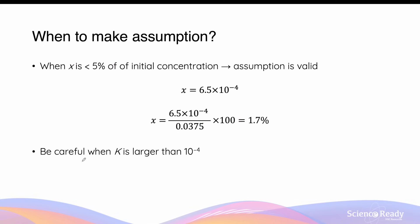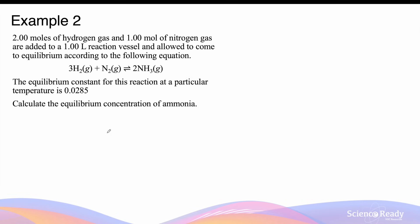Note that the 5% rule can only be checked after completing the calculation. A useful general guideline: if the equilibrium constant K is larger than 10⁻⁴ (including 10⁻⁴), be very careful, as x may exceed 5% of the initial concentration. If K is smaller than 10⁻⁴ — that is, 10⁻⁵ or smaller — the simplifying assumption will generally always be valid.